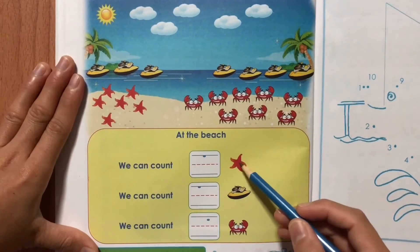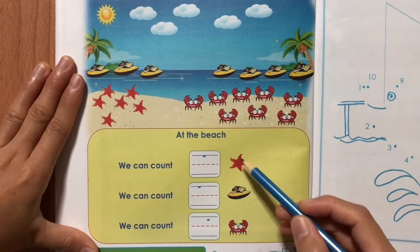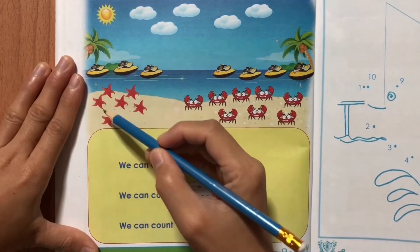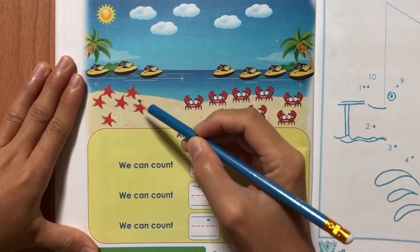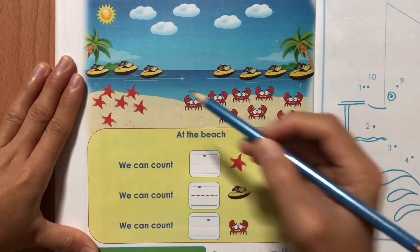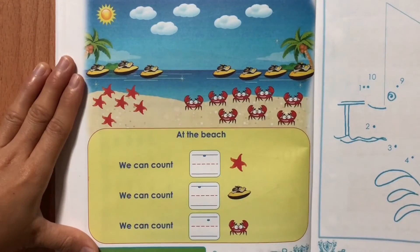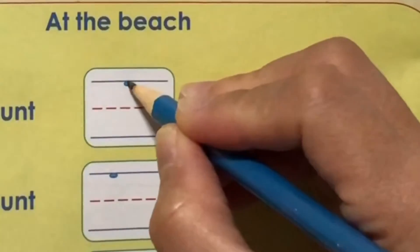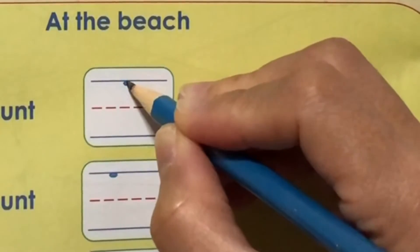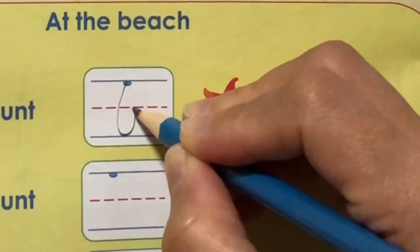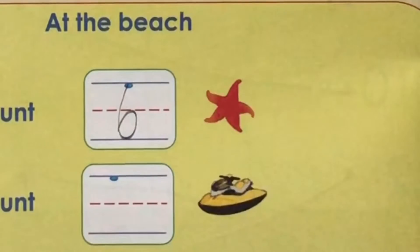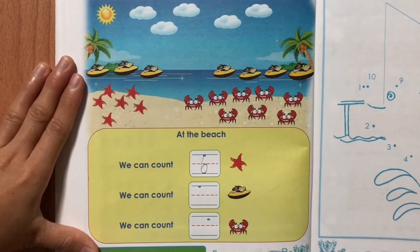Let's count the starfish. 1, 2, 3, 4, 5, 6. Let's write number 6 — start at the dot, make a C and curl it up. We can count 6 starfish.